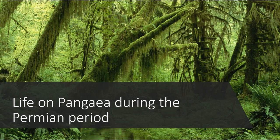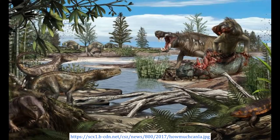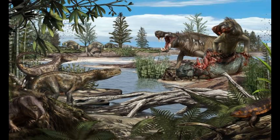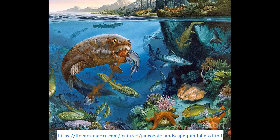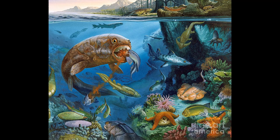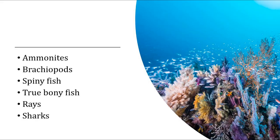Life on Pangaea during the Permian period. The Permian period saw a diverse range of life forms that inhabited both the land and the seas. The plant life included mosses and gymnosperms. The marine life existed in a massive Panthalassic ocean. Fossil evidence suggests that the coastal reefs were home to corals and sponges, while other organisms such as ammonites, brachiopods, spiny and true bony fish, rays, and sharks populated the rest of the ocean.